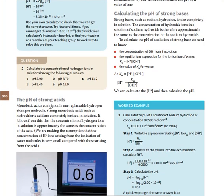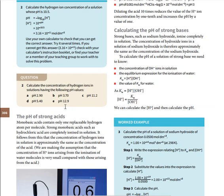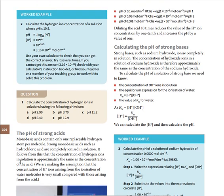Let's continue with the pH of strong acid. If you want to calculate the pH of a strong acid, you just need to calculate the concentration of hydrogen ions — that's as easy as that. For example, in hydrochloric acid, 1 mole of HCl produces 1 mole of H⁺. So 0.1 mol dm⁻³ HCl produces 0.1 mol dm⁻³ H⁺. Taking the negative log of 0.1 gives pH = 1.